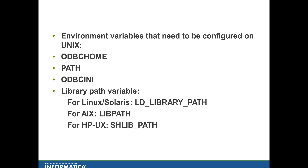There are four environment variables that need to be configured on any Unix-flavored OS: ODBC home, PATH, ODBC_INI, and the library path variable. Based on which flavor of Unix OS you are using, you will use the LD_LIBRARY_PATH variable, or the LIBPATH variable, or the SHLIB_PATH variable.